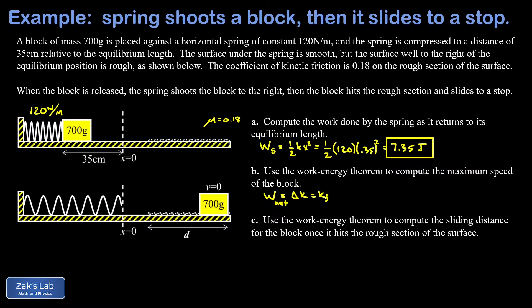We could write that as k final minus k initial. Because everything starts from rest here, the initial kinetic energy of the block is zero, so it's just the net work done on this block results in the final kinetic energy. And since the spring is the only thing doing work on this block, I can write the work done by the spring.